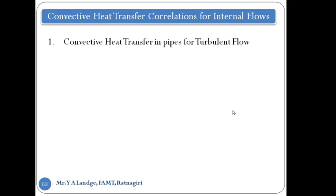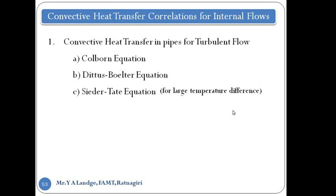First we will look at convective heat transfer in pipes for turbulent flow. When dealing with flow, we divide the flow pattern into laminar, transition, and turbulent. In heat transfer, maximum correlations are developed for laminar and turbulent flow. For turbulent flow, the well-known equations are: the Colburn equation, the Dittus-Boelter equation, and the Sieder-Tate equation, along with many more equations available for turbulent flow of fluid inside a pipe or duct.